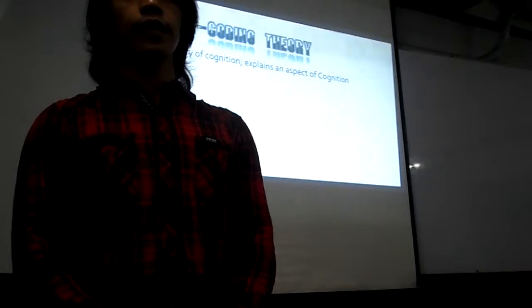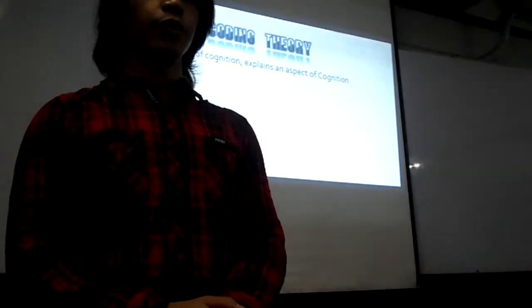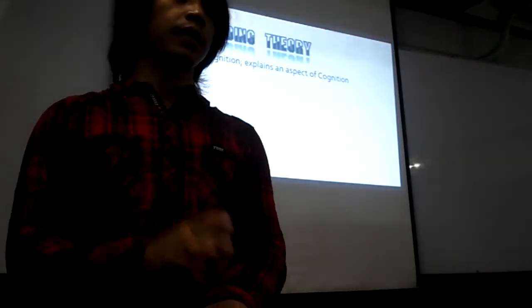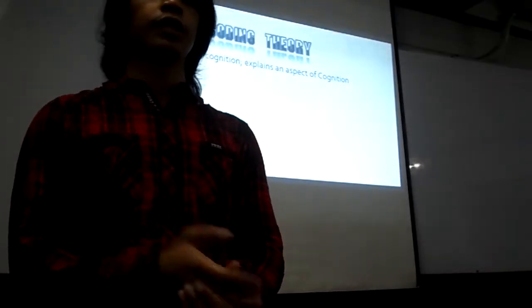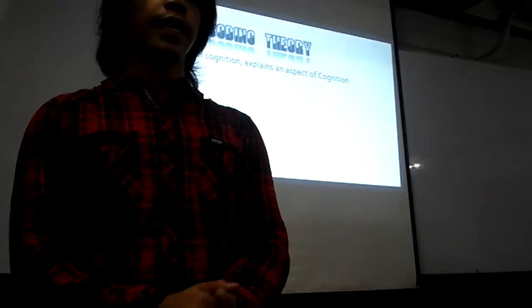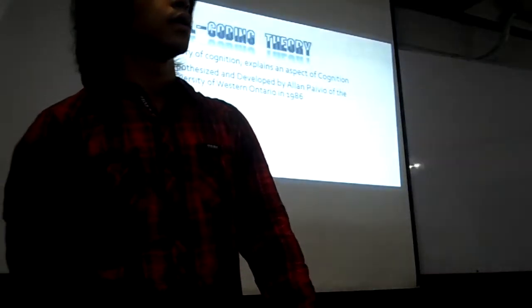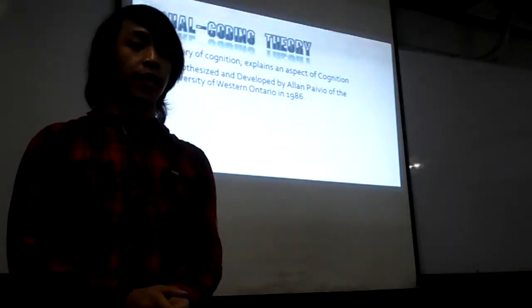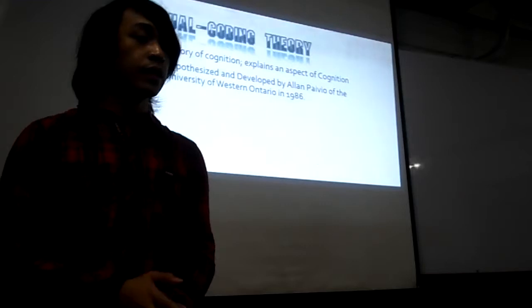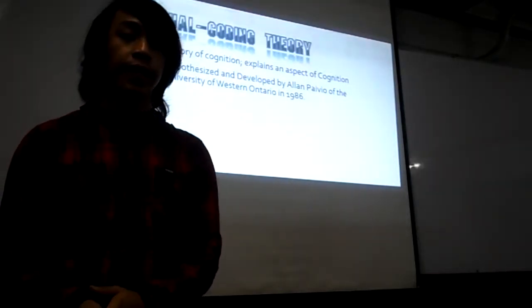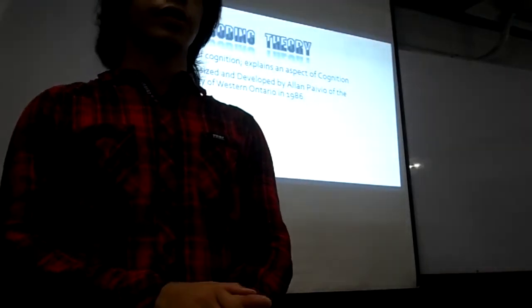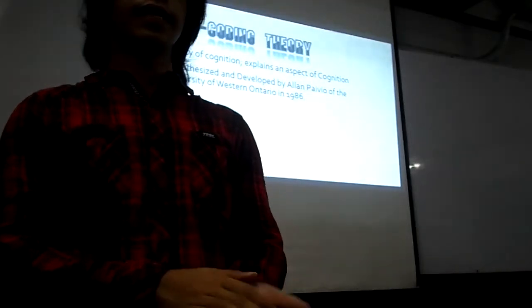So what is Dual Coding Theory? Basically, it is a theory of cognition — it explains an aspect of cognition to an individual. It was hypothesized and developed by Allan Paivio and a partner at the University of Western Ontario in 1986. Some references say it was 1971, but it was actually finalized in 1986.